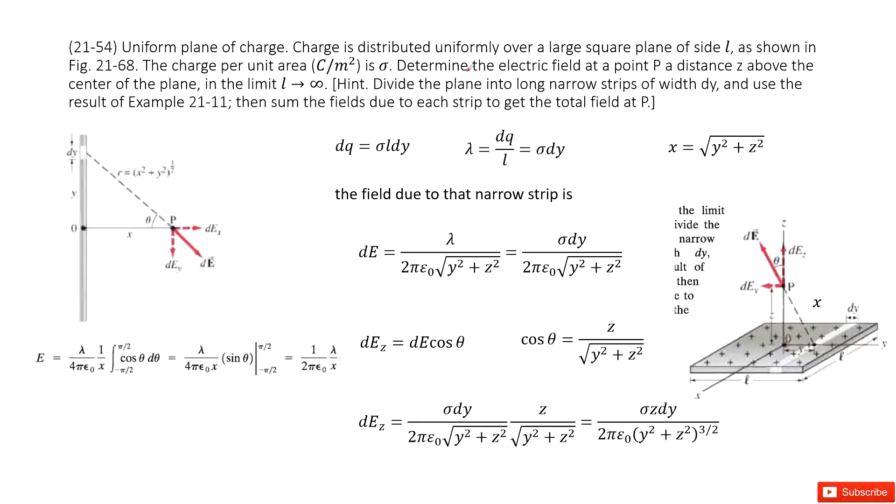You can see it tells you a hint. Divide the plane into narrow strips of width dy and use the result from example 11. And then sum the field due to each wire to get the total field. So this hint almost gives you the solution. We come back to example 11.